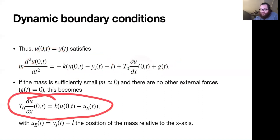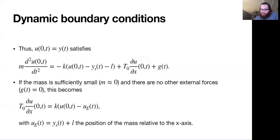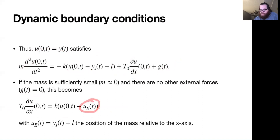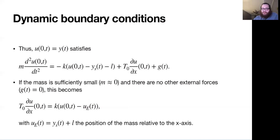We're left with this expression where we've taken y sub s plus L and called that E sub E, which you can interpret as the position of the mass or the end of the spring relative to the x-axis.